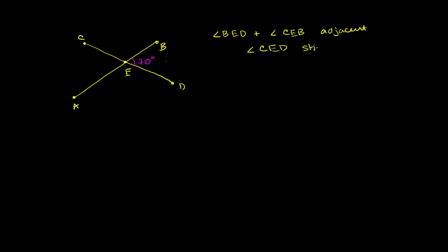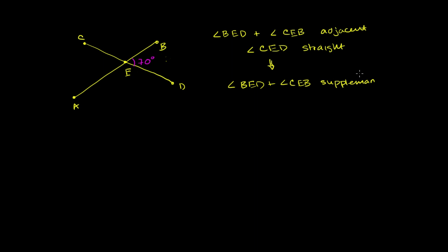We also see that angle CED is a straight angle. So we know that these two angles must also be supplementary — they're next to each other and they form a straight angle when you take their outer sides. So we know that angle BED and angle CEB are supplementary, which means their measures add up to 180 degrees.